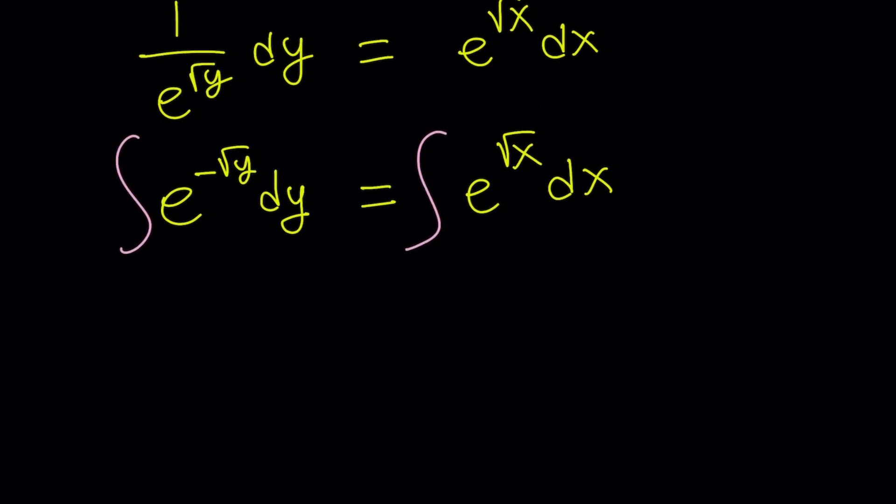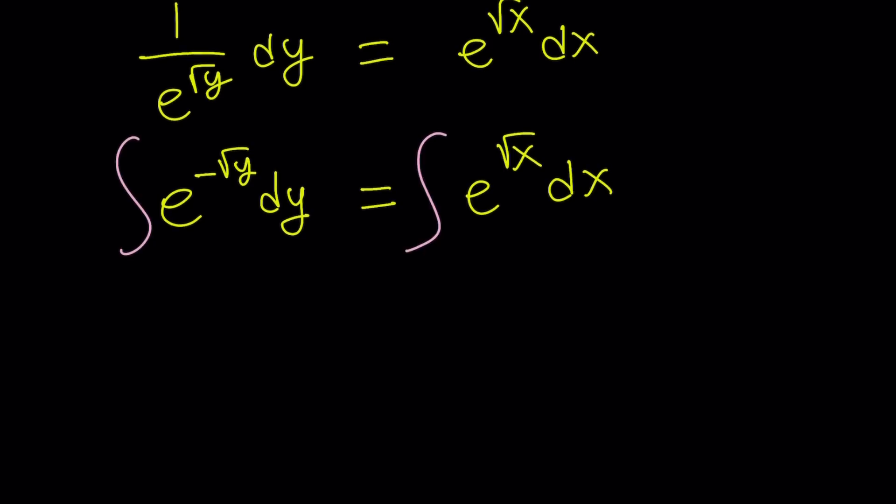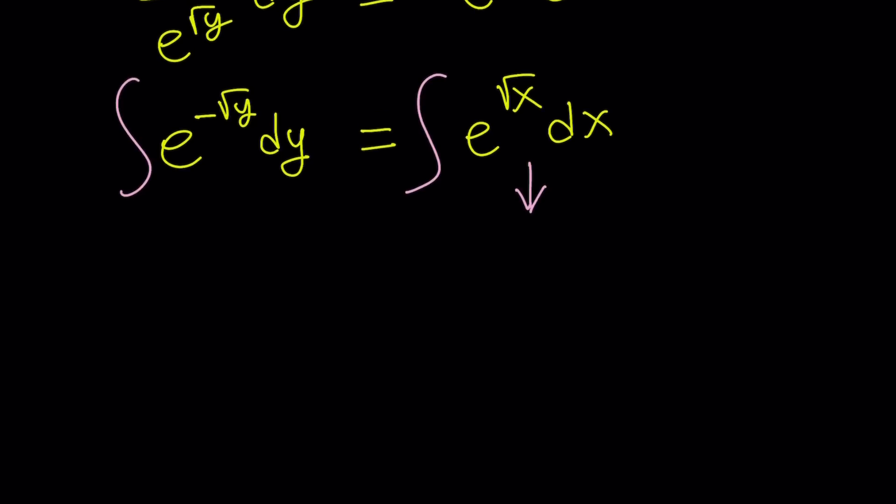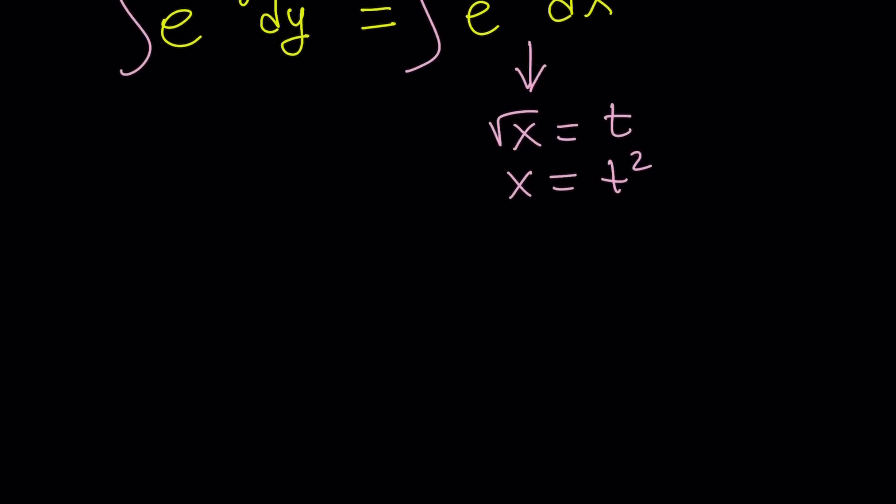So now how do you integrate something like e to the power negative square root of y or e to the power square root of x? We're going to use substitution here and then we're going to turn this into integration by parts, which could also be summarized as the DI method. I'll show you how that works and then we'll go from there. Let's go ahead and deal with this first. So first step, we're going to replace square root of x with something like t and then square both sides. X equals t squared. And now we're going to d both sides. So dx is going to be 2t dt.